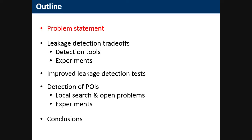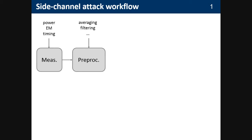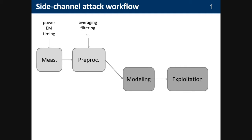Starting with the problem statement: if you look at what I would call the standard side-channel workflow, there are two steps you will always do — measurements and pre-processing. Measurement means acquiring the power consumption, electromagnetic radiation, or timing of your implementation. Pre-processing could be averaging, filtering, or anything that makes your signal look better. Then if you follow the formal path, there will be some kind of modeling — learning about the device's behavior or the statistical distribution of leakages — and then exploitation, where typically the goal is key recovery.